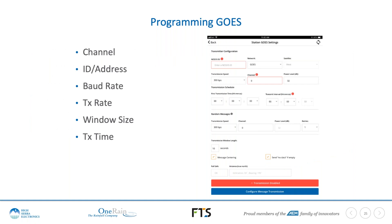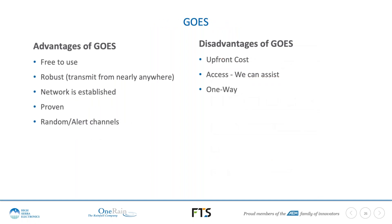Setting up a GOES transmitter is straightforward. When NESDIS gives you your access IDs, they provide your ID, channel, baud rate, transmission rate, and window. You simply enter those values directly into the data logger or GOES transmitter. The system has clearly labeled fields for this information, making it quite simple to configure.